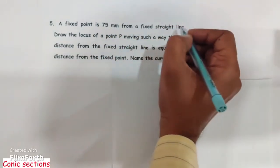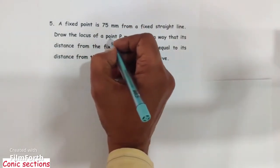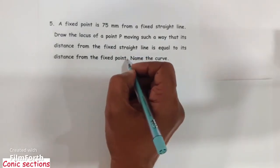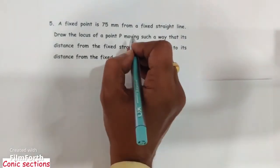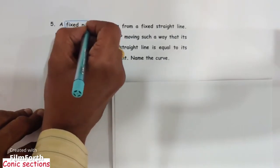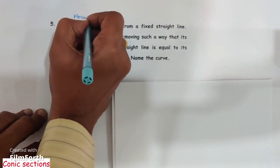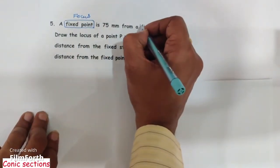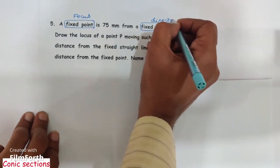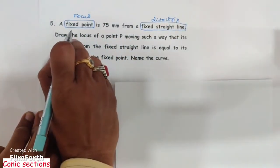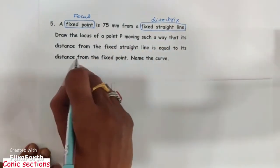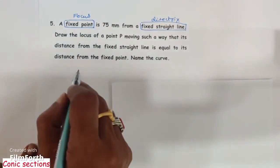The given problem is: a fixed point is 70 mm from a fixed straight line. Draw the locus of a point P moving such a way that its distance from the fixed straight line is equal to its distance from the fixed point. Name the curve. Here the fixed point is called as focus and the fixed straight line is called as directrix.